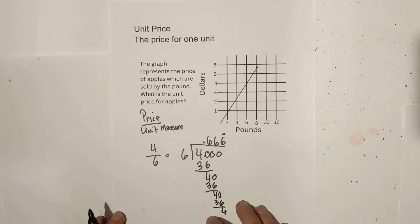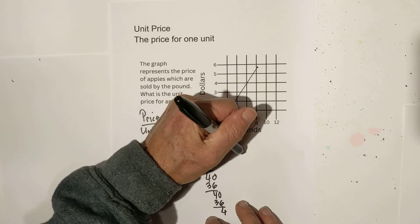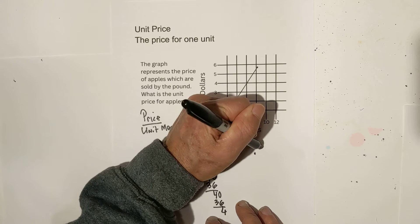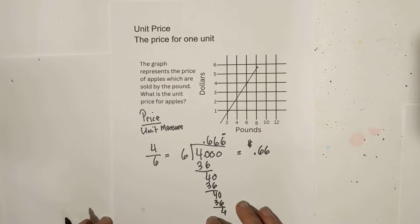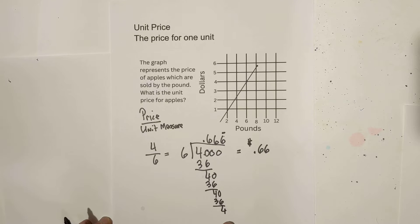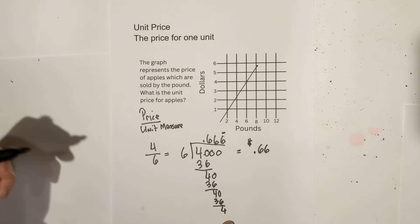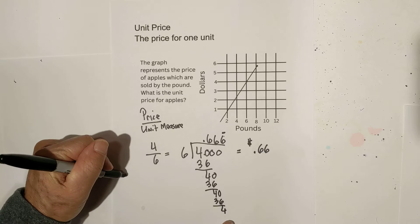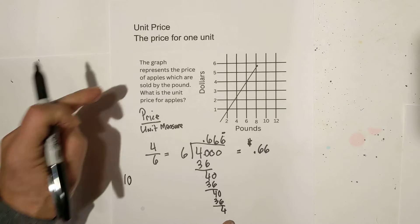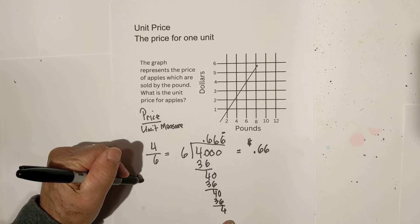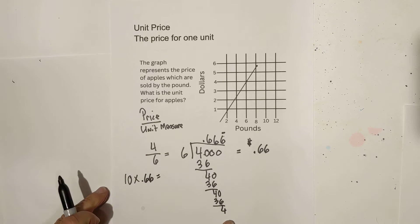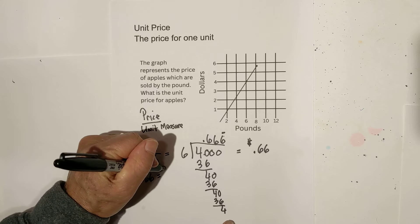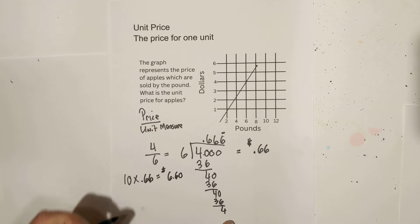So let's see what this is telling us. It is telling us that the unit price, the price for one unit, is 66 cents. So now in reality, what does that really tell us? That tells us, say we go in and we buy 10 pounds of apples. We would multiply 10 times the unit price, which is $0.66 or 66 cents. And that's going to total $6.60.